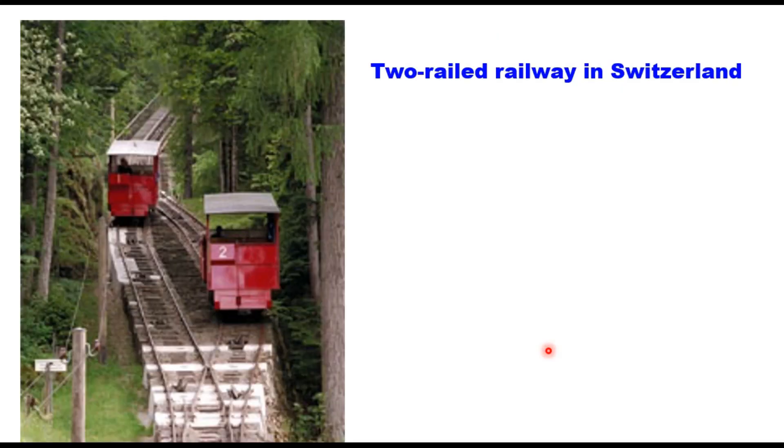This is a two-railed railway in Switzerland. And you can see here, as I explained to you earlier, this is a single track this side and a single track this side. And this is the loop where two cars can cross each other.